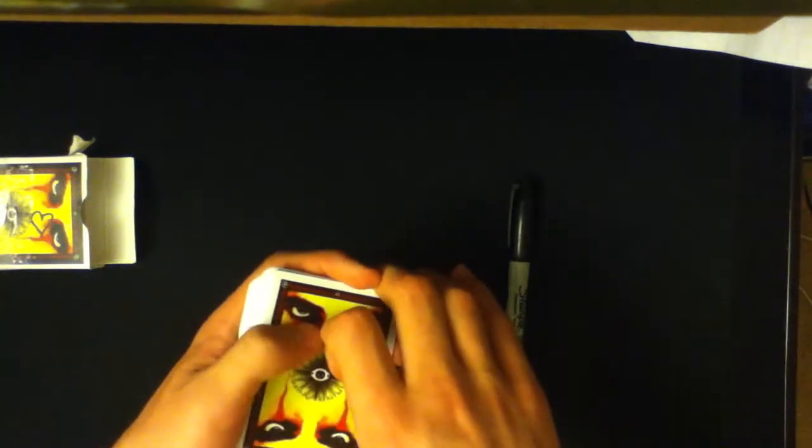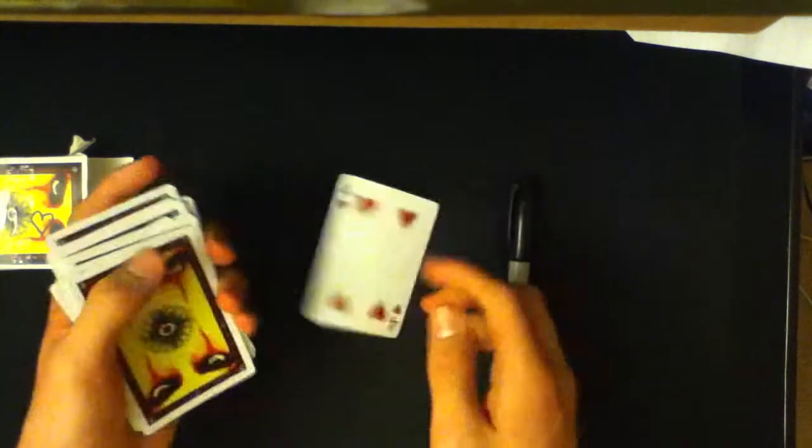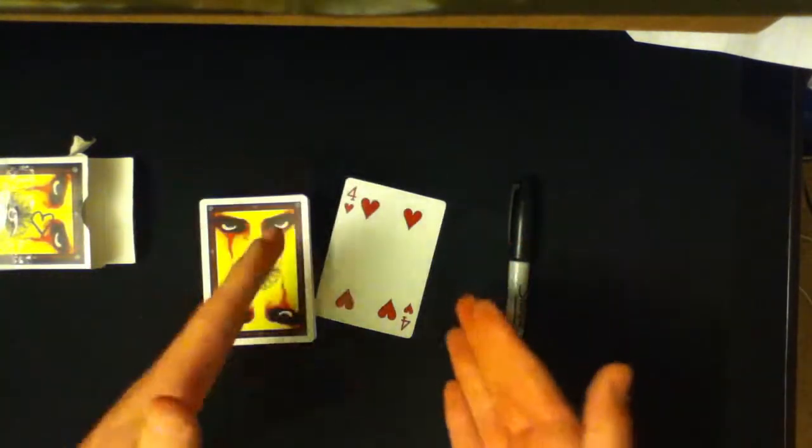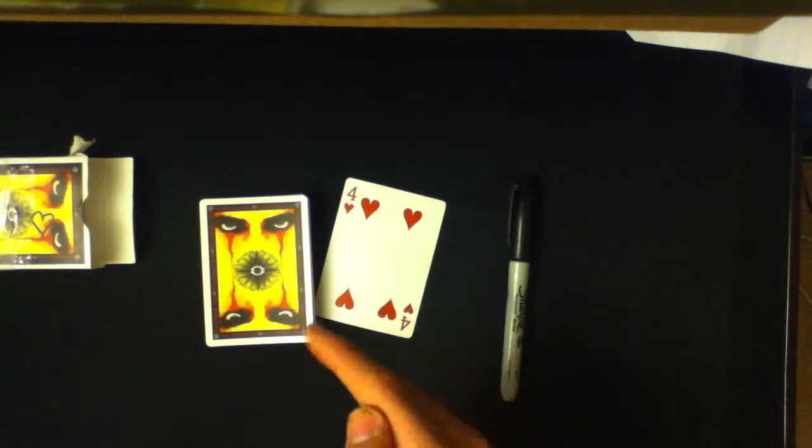What you'll do is you spread through, and as they reach out to pick a card, you quickly spread to your card that you want to force and they'll grab that card - the Four of Hearts. Then you'll say, 'Exactly, that's the card that I told you you were gonna pick.'